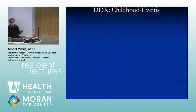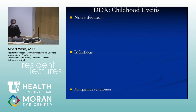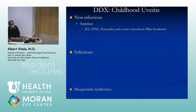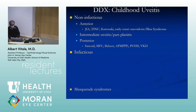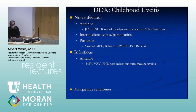The differential diagnosis of uveitis in children is best approached by anatomic categories. For non-infectious anterior uveitis, JIA is the most common entity. Intermediate and pan-uveitis follow, along with posterior uveitis including sarcoid and MCP. For infectious anterior uveitis, herpes is most common in both adults and children. Post-infectious autoimmune syndromes, Fuchs, and post-vaccination syndromes are also seen, particularly in children.